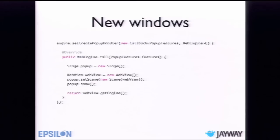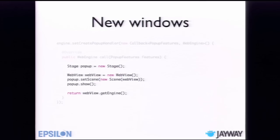Opening new windows takes a bit more work. When window.open is called in JavaScript, you can request certain features like a menu bar or resizability. We receive a PopupFeatures object in the event handler containing those feature requests. Our job is to return a WebEngine where the URL should be loaded — in this case, a new Stage with a simple WebView. Returning null prevents the new window from opening altogether.